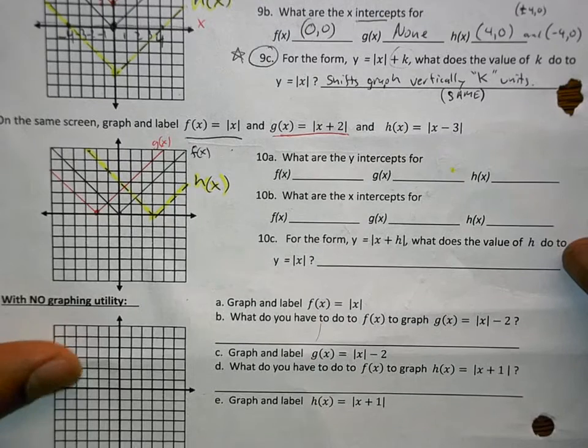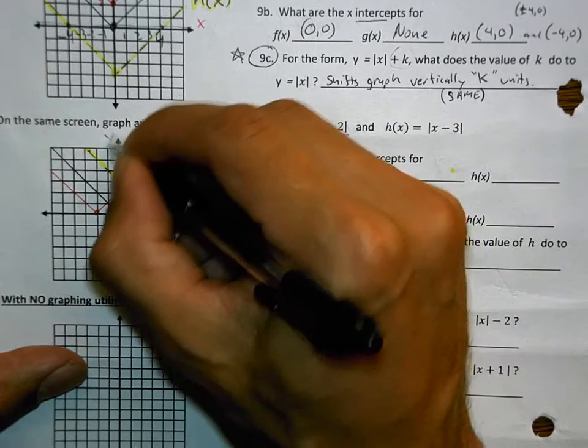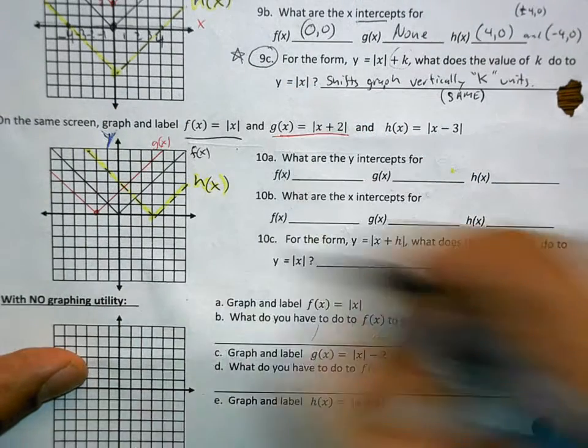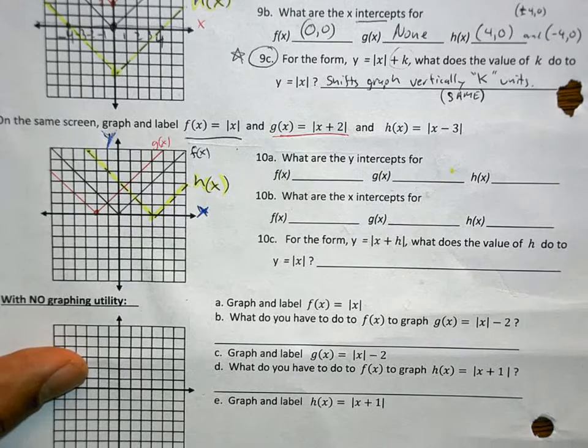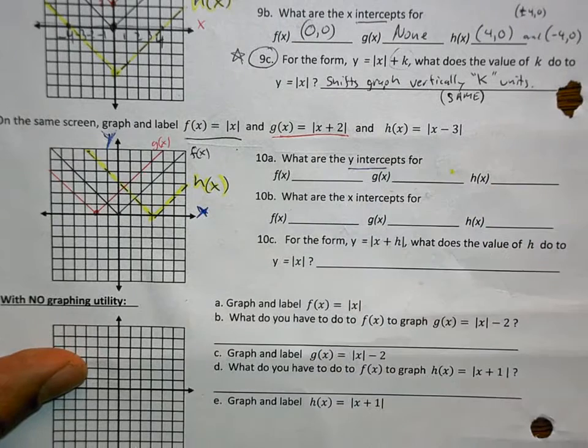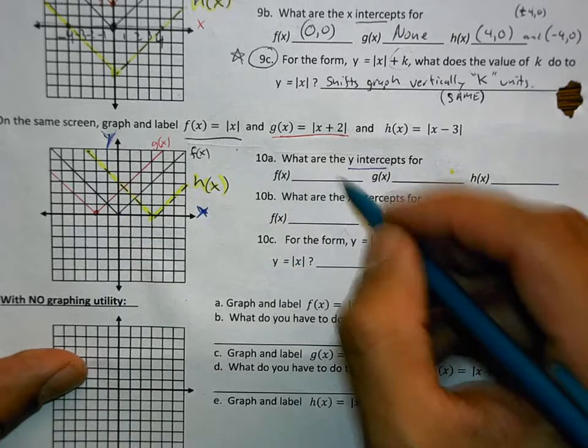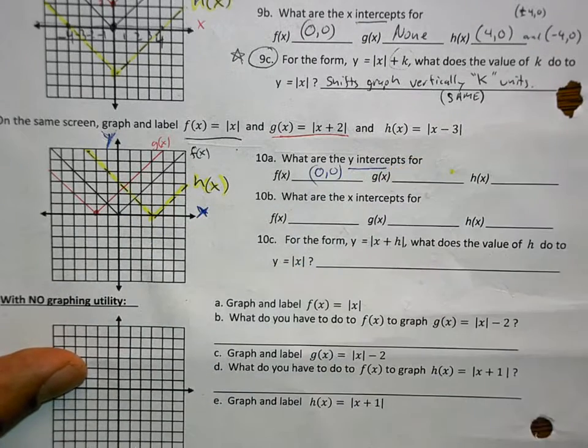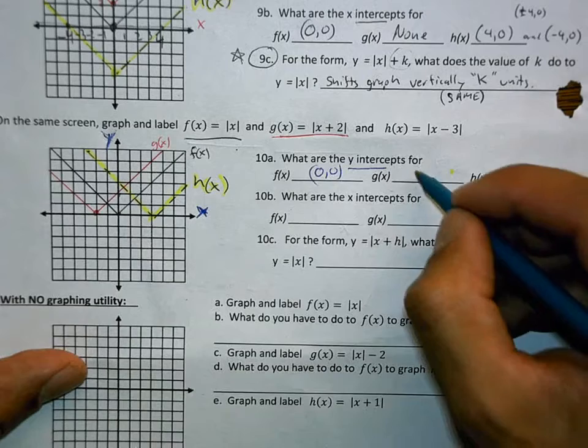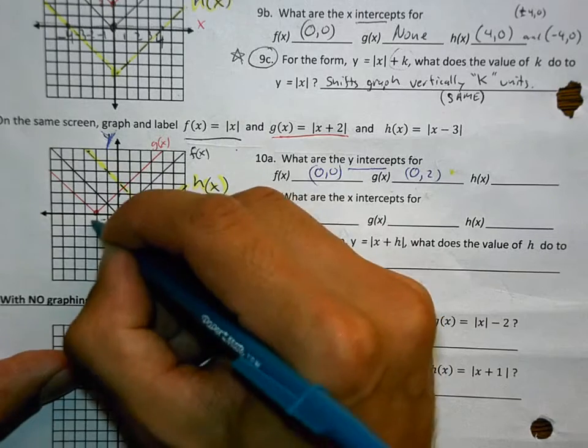What are the y-intercepts for f of x? Where does the f of x touch the y-axis? That's what it's asking. That pin has now died. What are the y-intercepts for f of x? Where does it touch the y-axis at what ordered pair?